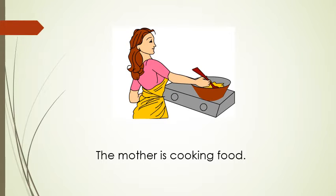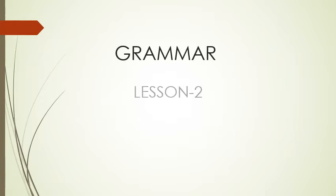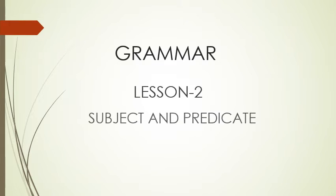Now, every sentence has two parts. One is called a subject, whereas the other is called a predicate. And this is what we are going to learn in today's lesson — lesson number 2: Subject and Predicate. Let's get started.